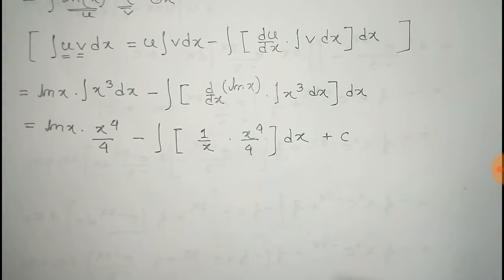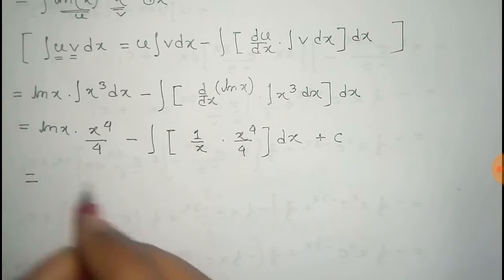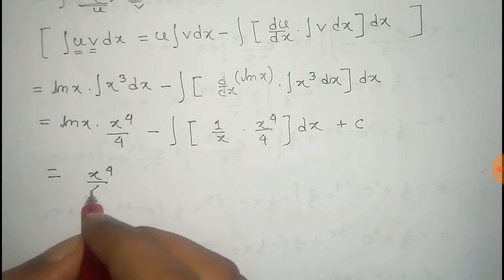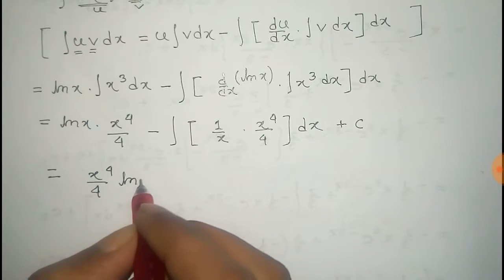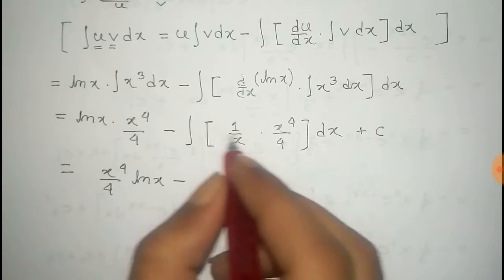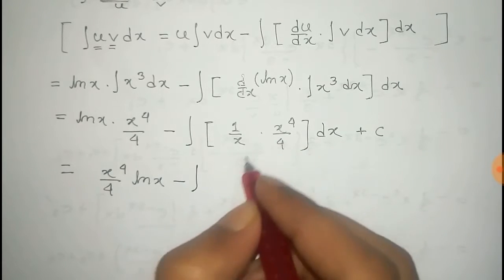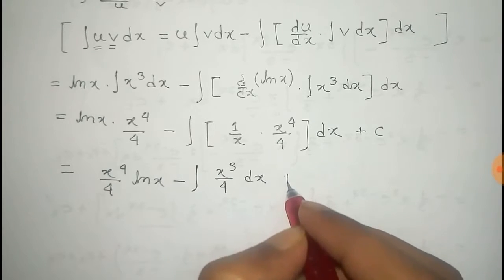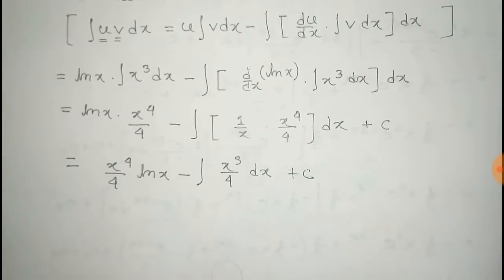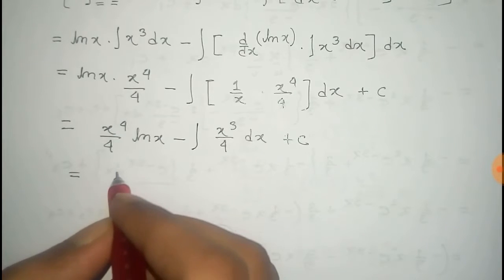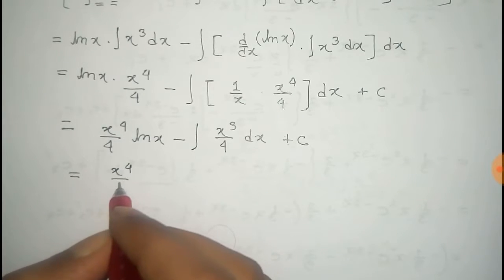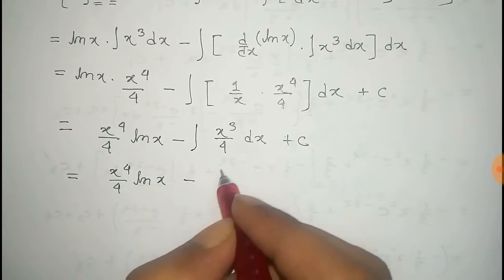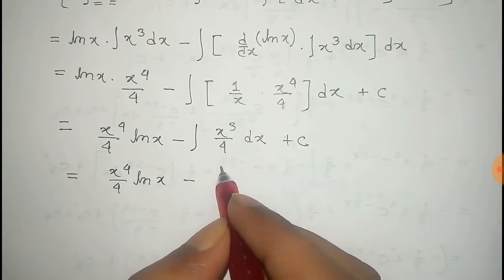So that's equal to x to the power 4 by 4 times log x, minus the integral of x cube by 4 dx, plus a constant c. That is x to the power 4 by 4 times log x, minus 1 by 4 taken out as a constant, times the integral of x cube dx.